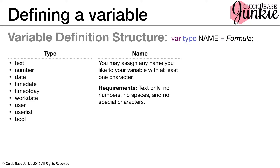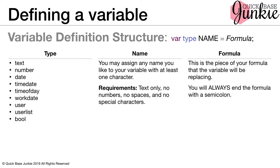It's also best practice to use descriptive words, such as URL if the variable refers to a URL. Last is the formula. This will be the piece of your formula that you want to include as part of the variable. Now you always end this portion of your variable definition with a semicolon — very, very important. It might drive you nuts trying to figure out what's wrong with your formula otherwise.